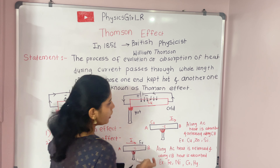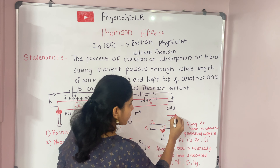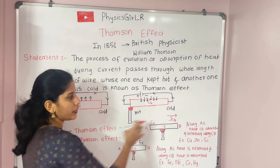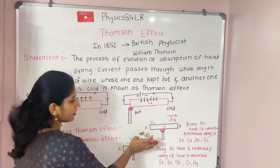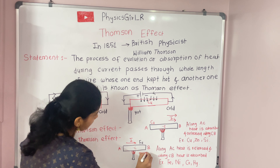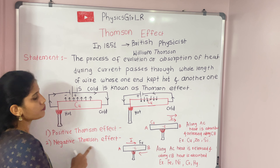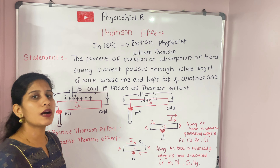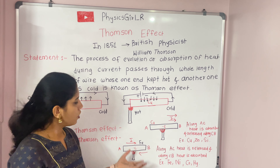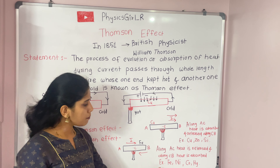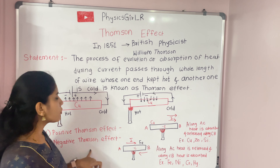To summarize the comparison: in the positive Thomson effect, the direction of current flow and the direction of heat transfer are the same. In the negative Thomson effect, the direction of heat transfer is exactly opposite to the direction of current flow. Iron is an example of the negative Thomson effect, along with other elements such as nickel, cobalt, and mercury.